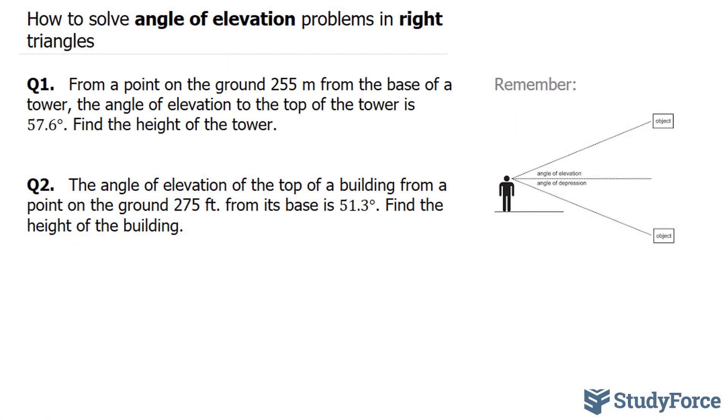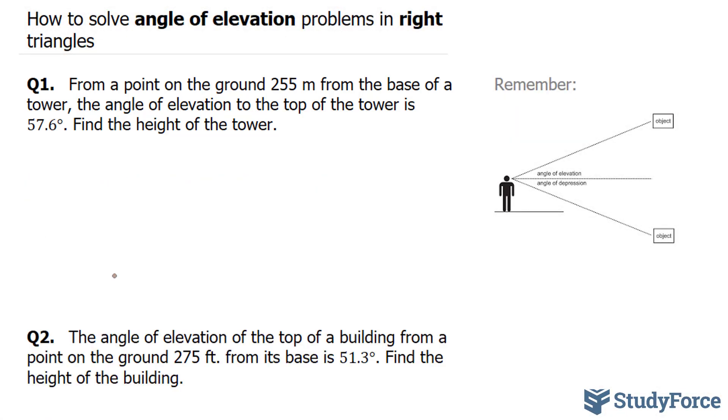To answer this question, we'll start off with an illustration. Let's pretend that we have an observer and a tower that is 255 meters away from the observer. The observer is looking up at an angle of 57.6 degrees, so the eyes of the observer are looking up to the top of the tower.